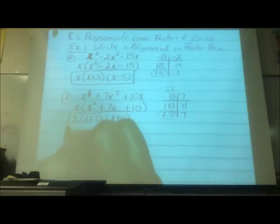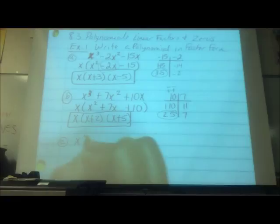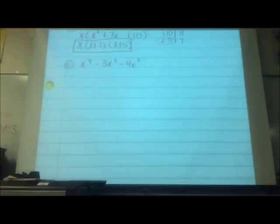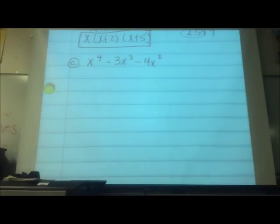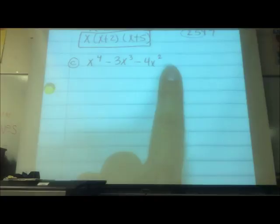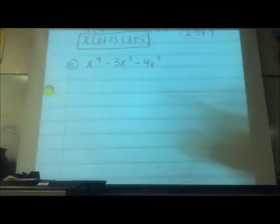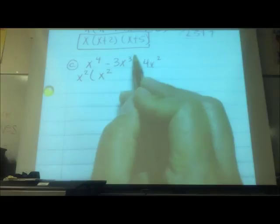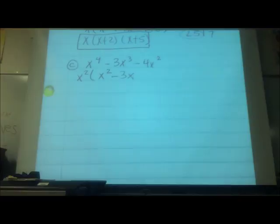X to the fourth minus 3X cubed minus 4X squared. What do they have in common? X to the 2nd. We could factor out an X to the 2nd, because this one has 4, this one has 3, and this one has 2. So factor out X squared. If I have 3X cubed and I divide by X squared, that's 3X.